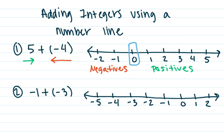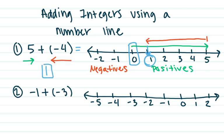When I use my number line to represent my answer, I'm going to start at zero and travel five spaces to the right — that is our first number. Now, negative four is trying to travel back to the left, so from five I am going to travel four spaces to the left: one, two, three, four spaces. I look down and there is my answer. Five plus a negative four is going to equal a positive one. That negative four tried to get back into the negative side of zero, but it did not make it all the way. If we were using counters, all of that overlapping area would be our zero pairs that we would cross out.